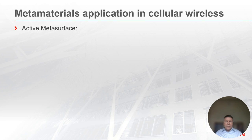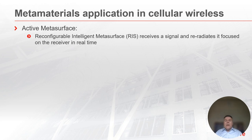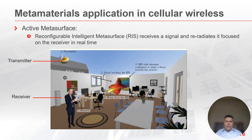Let's now talk about active metasurfaces. Active metasurfaces are called reconfigurable intelligent metasurfaces, or RIS. A RIS receives a signal and re-radiates it focused on the receiver in real time. As we can see in this picture, taken from the article "Three Myths and Two Critical Questions," published in IEEE Communications Magazine in December 2020, a signal comes from the outside through the window to the RIS, which is a surface on the wall, and the RIS then redirects the incoming signal via beamforming focused on the receiver.